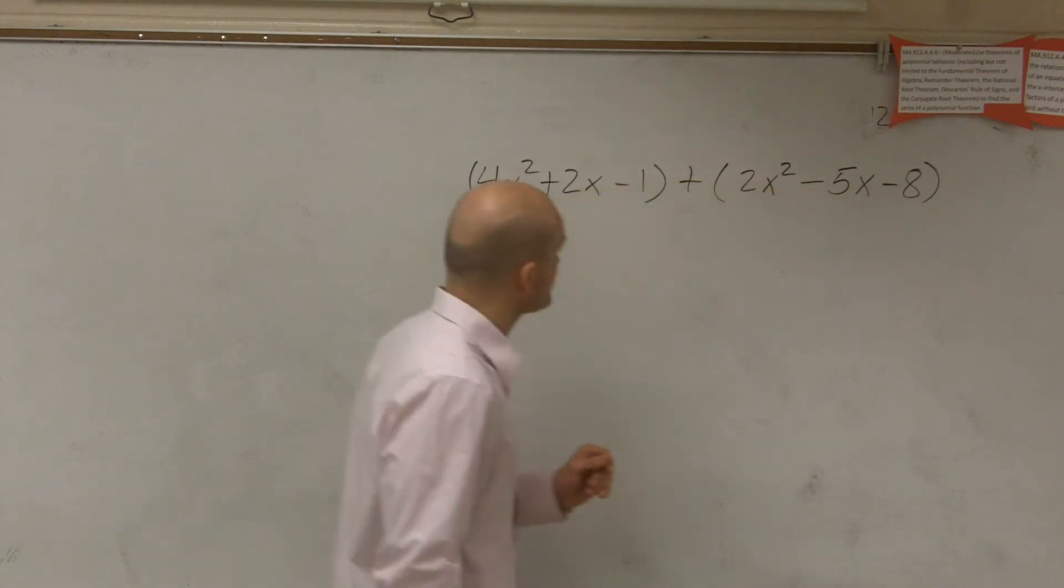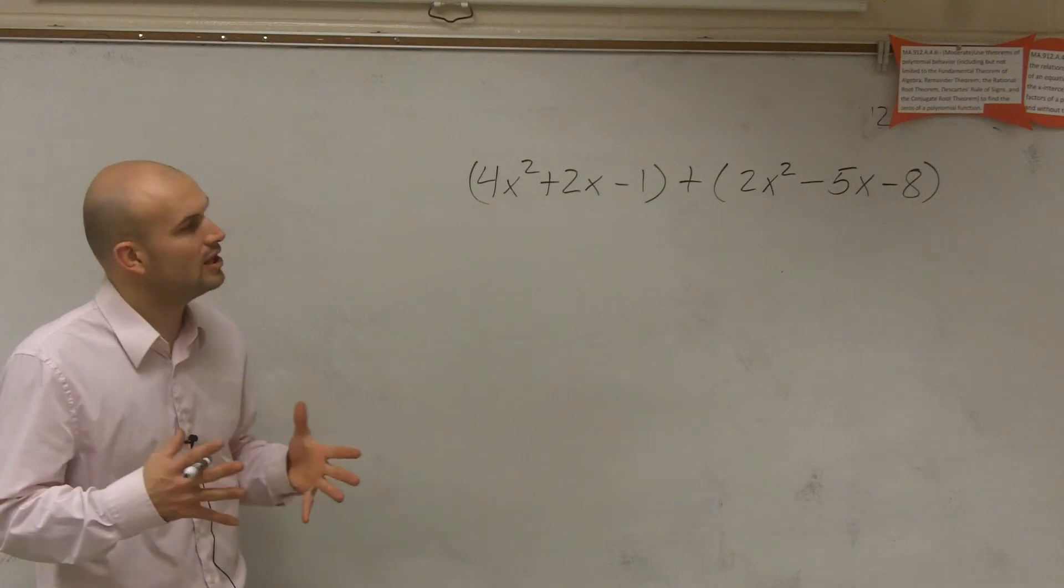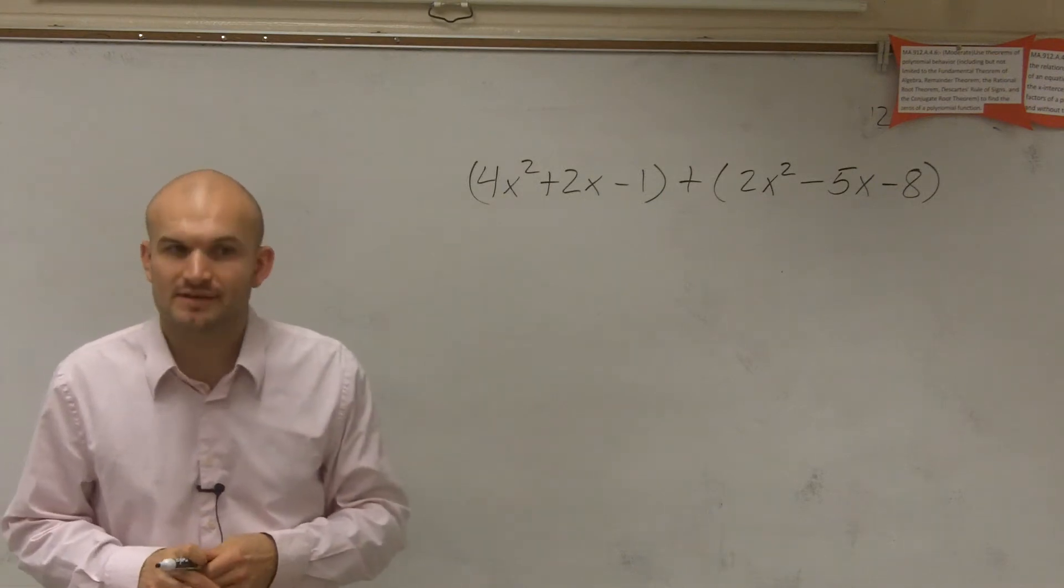So everything's written up there. So when looking at this, you have 4x² + 2x - 1 plus 2x² - 5x - 8.